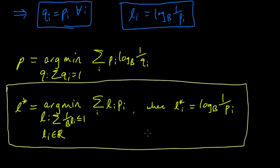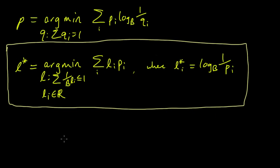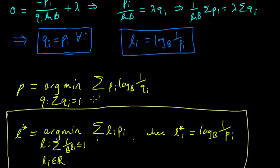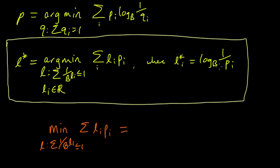Let's also write down not just the minimizer but the minimum value. The minimum of the expected length, subject to the Kraft inequality with real-valued lengths, is obtained by plugging in our minimizing q's, which were just the pi's. So we plug in log base b of 1 over pi for the lengths, giving us the minimum value: the sum over i of pi·log_b(1/pi).